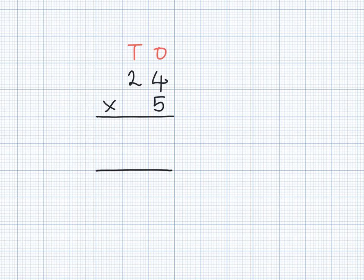We start with the 1s and write what calculation we are doing on the side. 4 times 5 equals 20 and we write this underneath the calculation. Remember to be careful when lining up the numbers so they are in the correct place value columns.